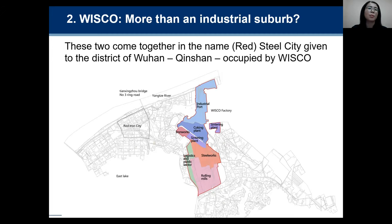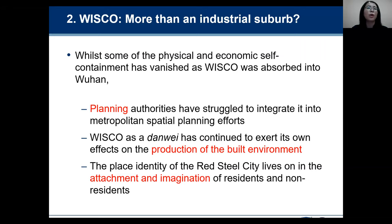This is a larger map of Qingshan. We can see the factory works of Wisco here. While some physical and economic self-containment has vanished as Wisco was absorbed into Wuhan in more recent decades, we still found imprints of this in the city. First, planning authorities have struggled to integrate it into metropolitan spatial planning efforts. Wisco as a danwei has continued to exert its own effects on the production of the built environment. And last, the place identity of the Red Steel City lives on in the attachments and imagination of residents and non-residents.